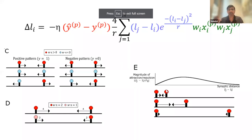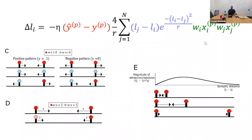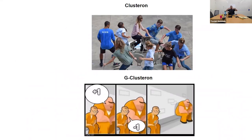Synapses can cross each other — there's no collision constraint, so they can swap positions completely. If the original clusteron is like playing musical chairs, the Gradient Clusteron is like sitting on a long bench and sliding towards your friends (same-sign synapses) and away from your enemies (opposite-sign synapses).